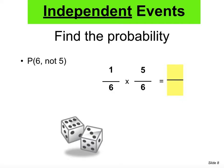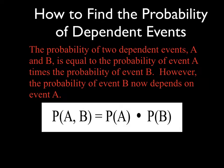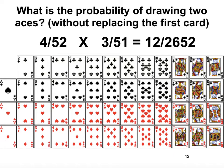So what about the two other types of events in compound probability? Let's go to dependent events. What happens during the second event depends upon what happened before — the second event is affected by what happened in the first event. In other words, the result of the second event will change because of what happened first. The probability of two dependent events A and B is equal to the probability of A times the probability of B, but the probability of B now depends on event A. It is the same process — just multiply them.